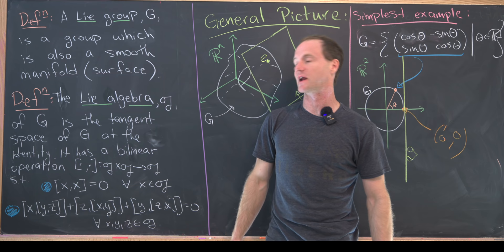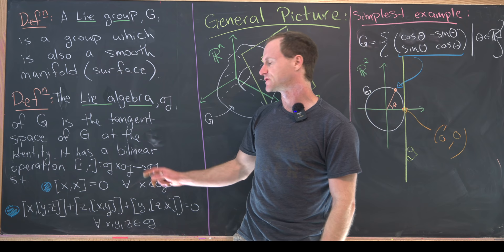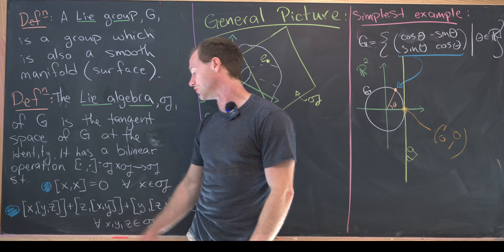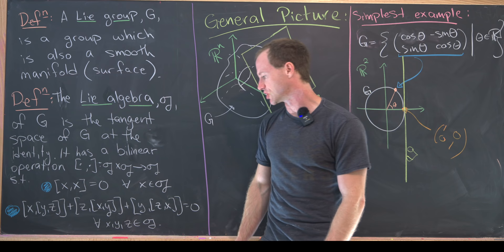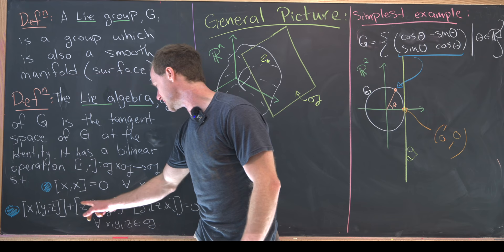Furthermore, the Lie algebra 𝔤 has a special bilinear operation often called the bracket. This is a non-commutative and non-associative operation satisfying two main rules. First, for any element X in 𝔤, X bracket X equals zero. Second, and most important, is the Jacobi identity, which measures how non-associative the space is: cycling through X, Y, Z — [X,[Y,Z]] + [Z,[X,Y]] + [Y,[Z,X]] = 0.